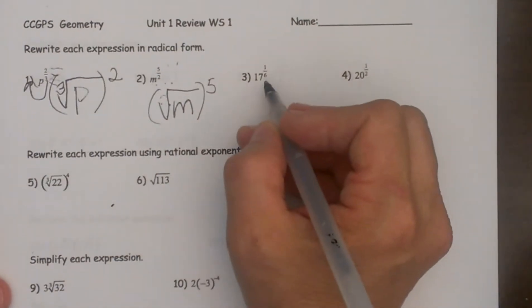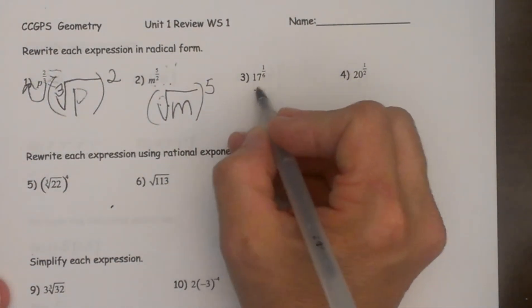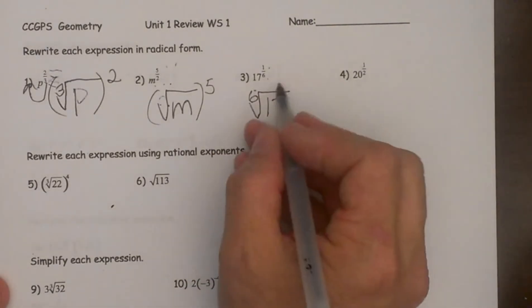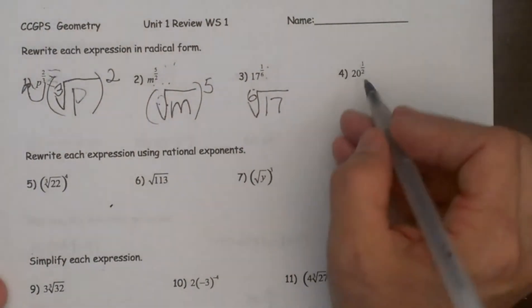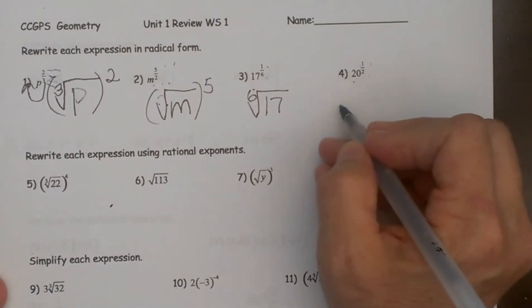So let's look at this one. This is seventeen to the one sixth. So that means it is the sixth root of seventeen to the first power. So I don't need to raise that to the first power. It is always to the first power. And then we have twenty to the one half. That is just going to be the square root of twenty.